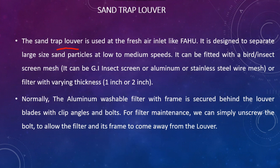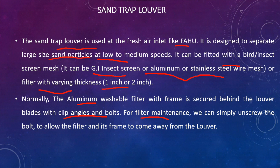The sand trap louver is used at the fresh air inlet, like an FHU. It is designed to separate large-size sand particles at low to medium speed. It can be fitted with a bed or insert screen mesh — either GI insert screen, aluminum, or stainless steel wire mesh or filter — with varying thickness like 1 inch or 2 inch. Normally, the aluminum washable filter with the frame is secured behind the louver blades with a clip angle and bolt. For filter maintenance, you can simply unscrew the bolt to allow the filters and frame to come away from the louver.